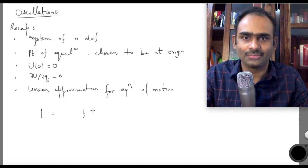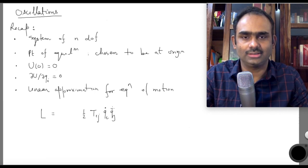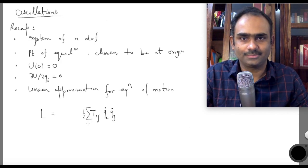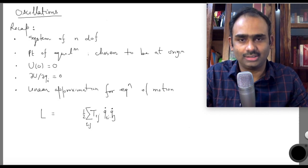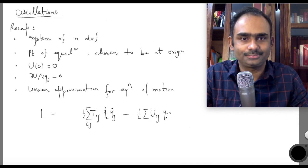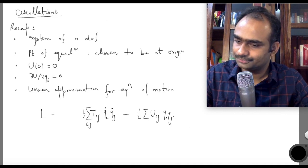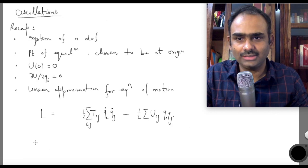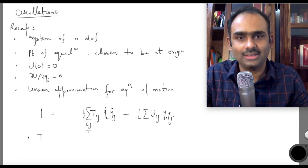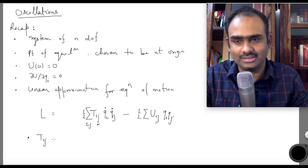Under the linear approximation for the equations of motion, we wrote down that the Lagrangian becomes: half T_ij q̇_i q̇_j with summation over all i and j running from 1 to n, minus half U_ij q_i q_j, where T_ij and U_ij are constants. T_ij and U_ij are real symmetric matrices.